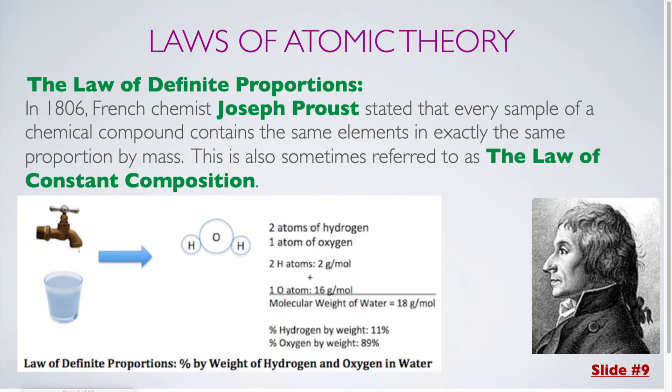Our next law is the law of definite proportions. And this one was created by a French chemist, Joseph Proust in 1806. He stated that every sample of a chemical compound contains the same elements and exactly the same proportion by mass. This is also sometimes known as the law of constant composition. I tend to use the law of definite proportions. You can see in our example here that if you consider water, which is H2O, you have a single oxygen atom and two hydrogen atoms. So you end up with 11% by mass hydrogen and 89% by mass oxygen. So no matter how much water you have or where you get that water, it will always have that same percentage breakdown.